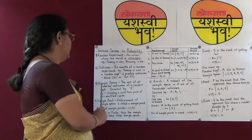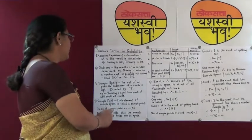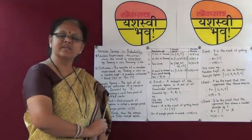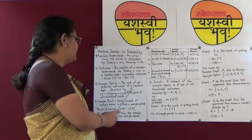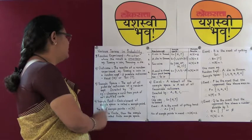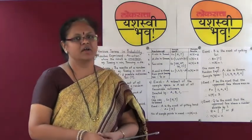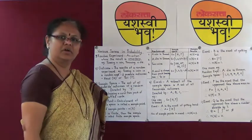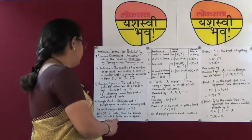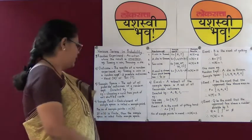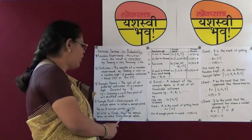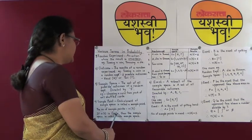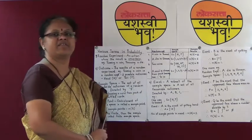Let us come to the third term in probability, that is, sample space. The set of all the possible outcomes of a random experiment is termed as a sample space. This sample space is denoted by the capital letter S. For example, when we choose a card from a pack of well-shuffled cards, we get 52 possible outcomes. The fourth term is sample point. Each element of a sample space is termed as a sample point. The number of sample points are denoted by small n in brackets with S written inside, n(S). If n(S) is finite, then the sample space is called a finite sample space.